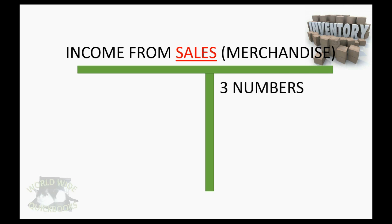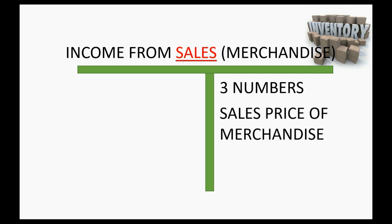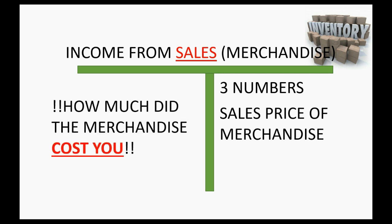We're really dealing with three numbers. The sales price of the merchandise, which will get recorded as a credit to the income account — the same way income from a service got recorded to the service income account. But with merchandise, we also have to consider how much the merchandise cost you when you bought it, because the difference between the price that you record as income and the cost that you pay for the merchandise will be your profit.